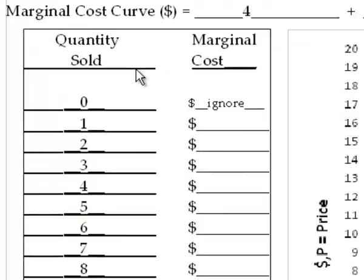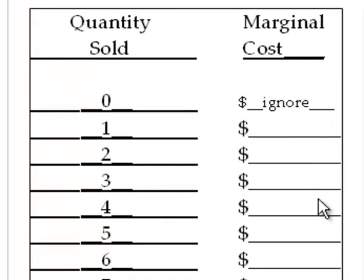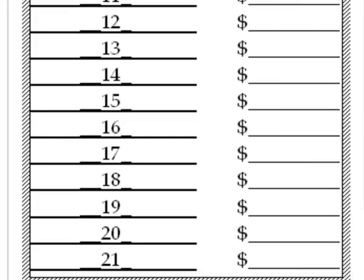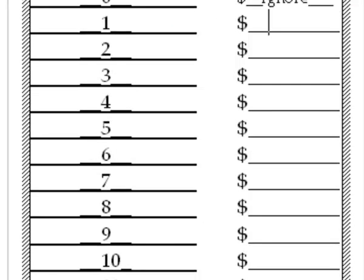After you've done that what you want to do is go ahead and start filling out this table right here. Let's just fill it out first and then I'll show you why we fill it out. What we do is we take each quantity and we fill in the marginal cost. So what we're doing is actually calculating what is the marginal cost of each unit using this formula.